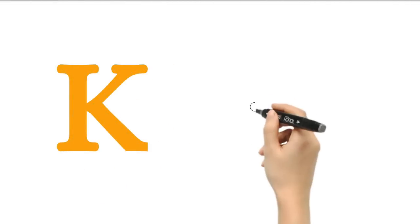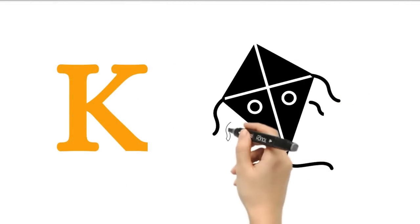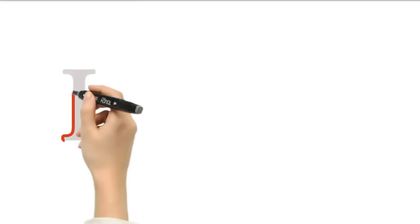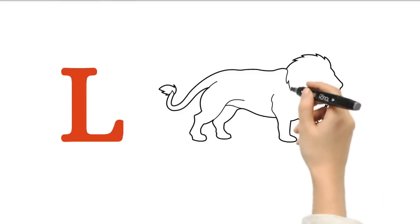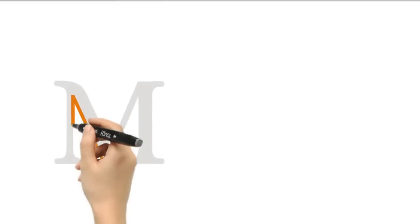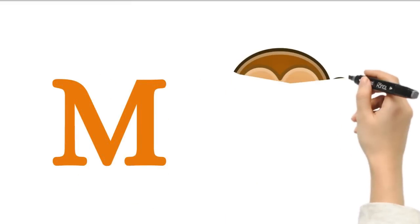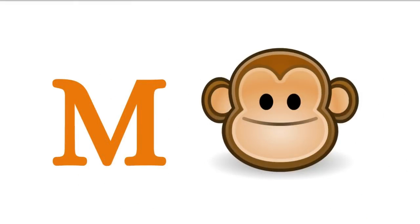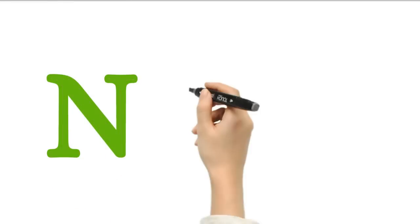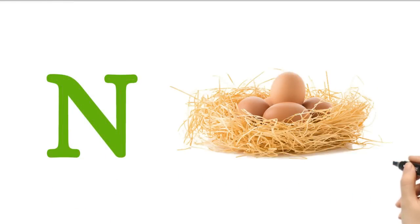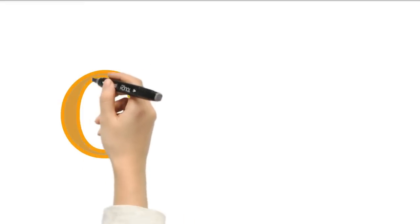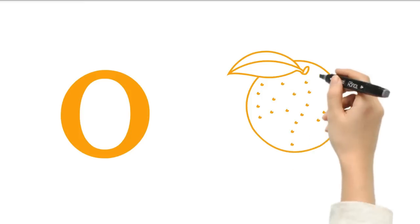K. K for kite. L. L for lion. M. M for monkey. N. N for nest. O. O for orange.